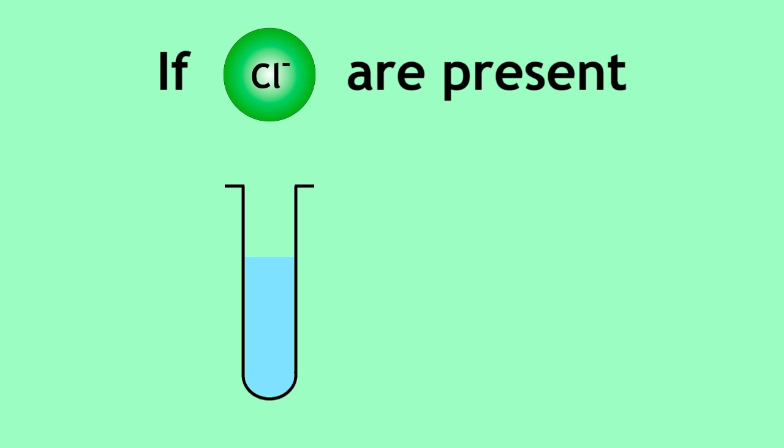If chloride ions are present, the resulting silver chloride precipitate is white. If bromide ions are present, the resulting silver bromide precipitate is cream. If iodide ions are present, the resulting silver iodide precipitate is yellow.